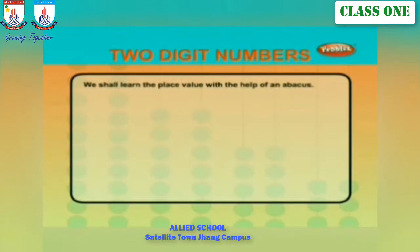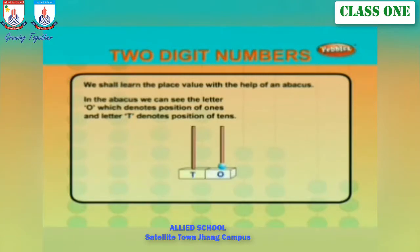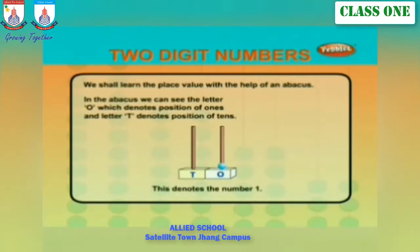We shall learn place value with the help of an abacus. In the abacus, we can see the letter O, which denotes the position of ones, and the letter T, which denotes the position of tens. Here is one bead in the ones position — this denotes the number one.